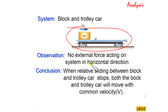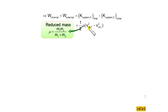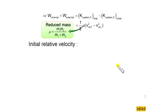Let this common velocity be capital V. Now let us write the work-energy theorem: work done by internal forces plus work done by external forces equals the final kinetic energy of the system with respect to the centre of mass minus the initial kinetic energy with respect to the centre of mass. Initially, the block was given velocity v naught and the trolley was at rest, so the initial relative velocity between block and trolley equals v naught minus 0, which is v naught.